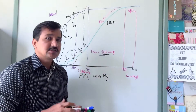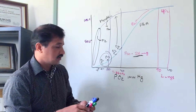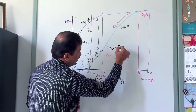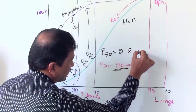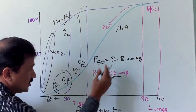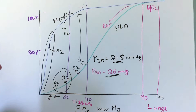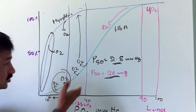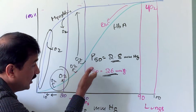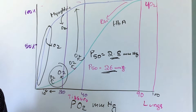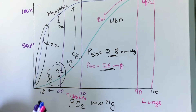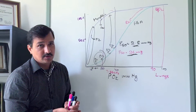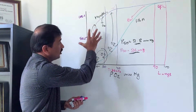Myoglobin has a single subunit and therefore higher affinity for oxygen. Its P50 is just 2.8 millimeters of Hg, compared to 26 mmHg for adult hemoglobin. This means myoglobin has significantly greater oxygen affinity than hemoglobin.